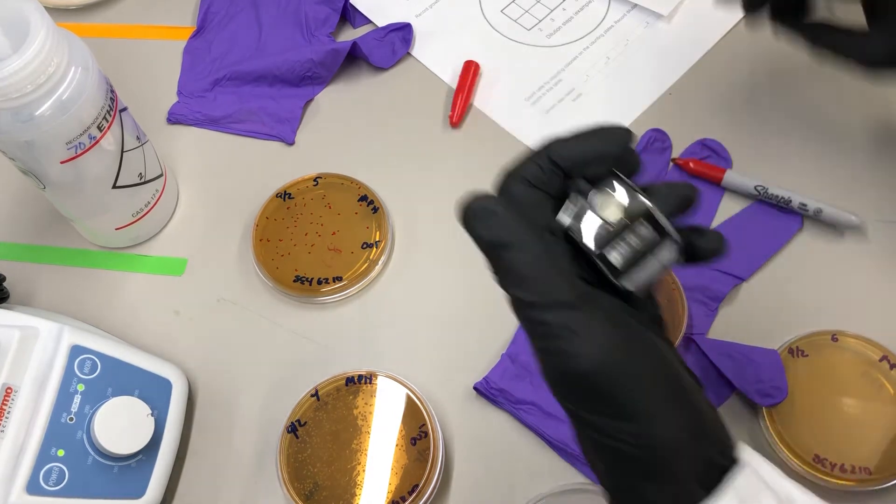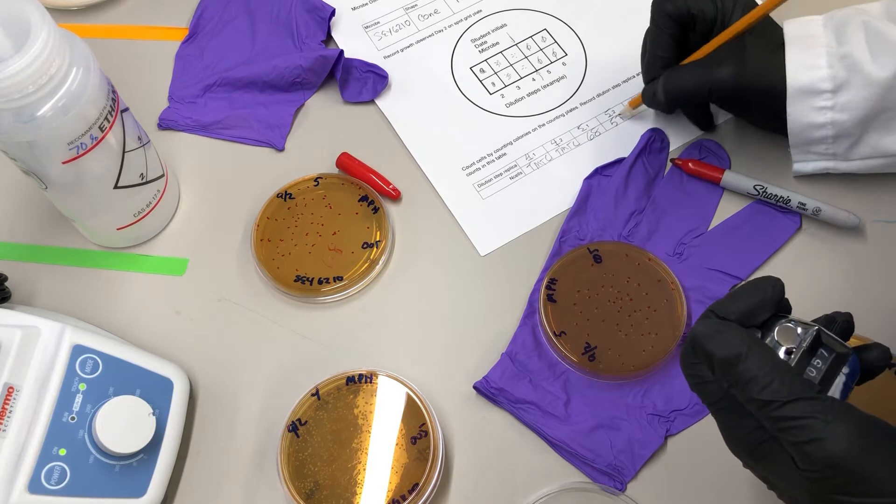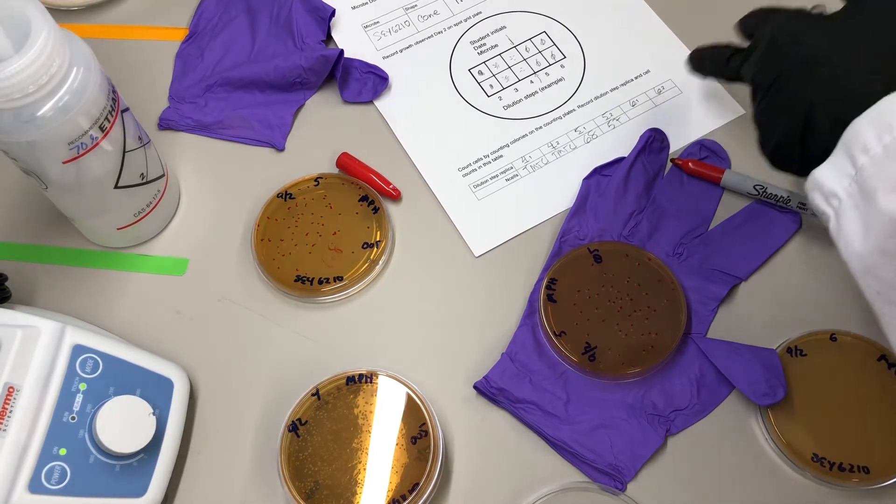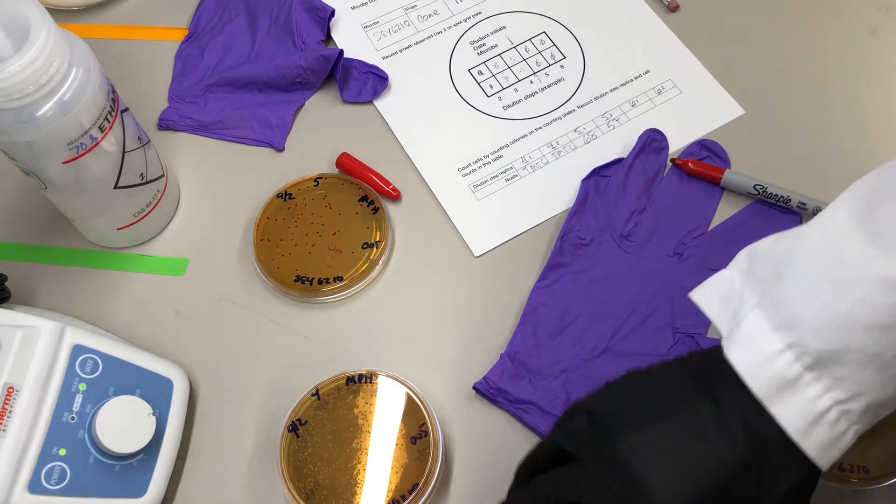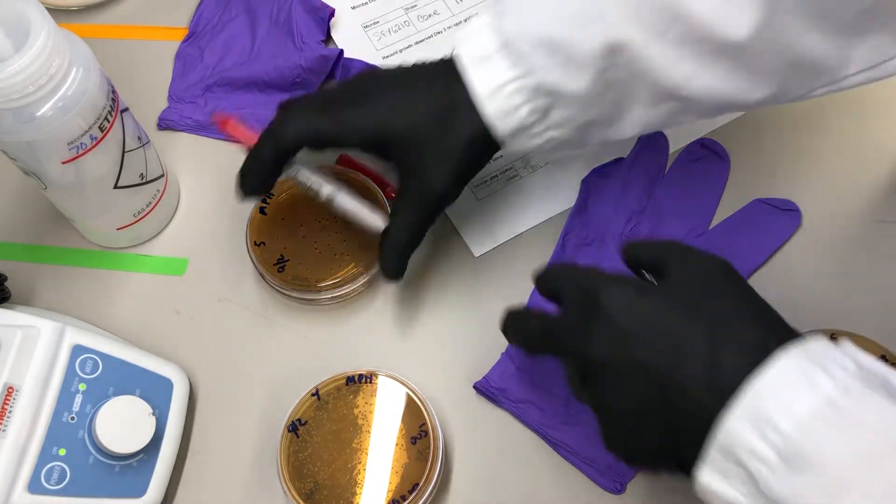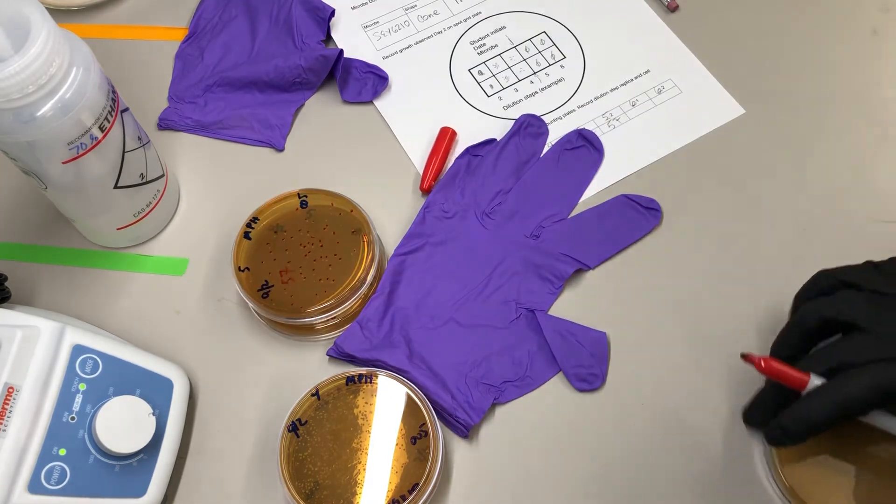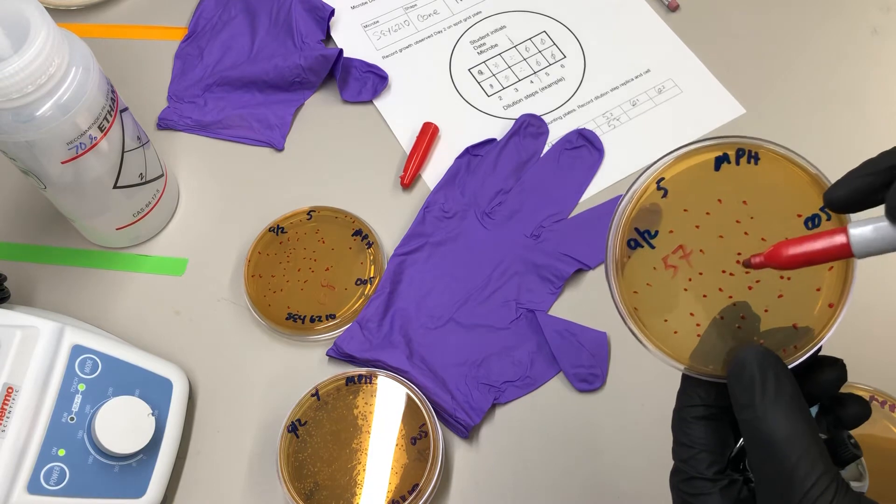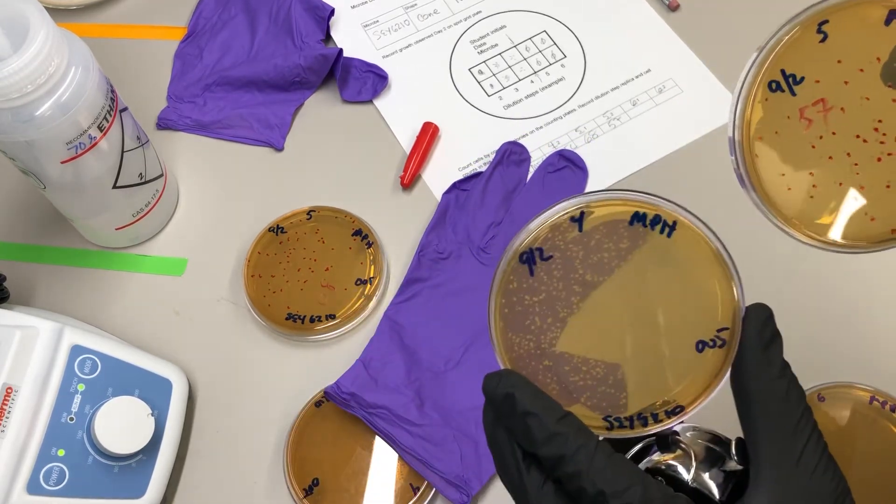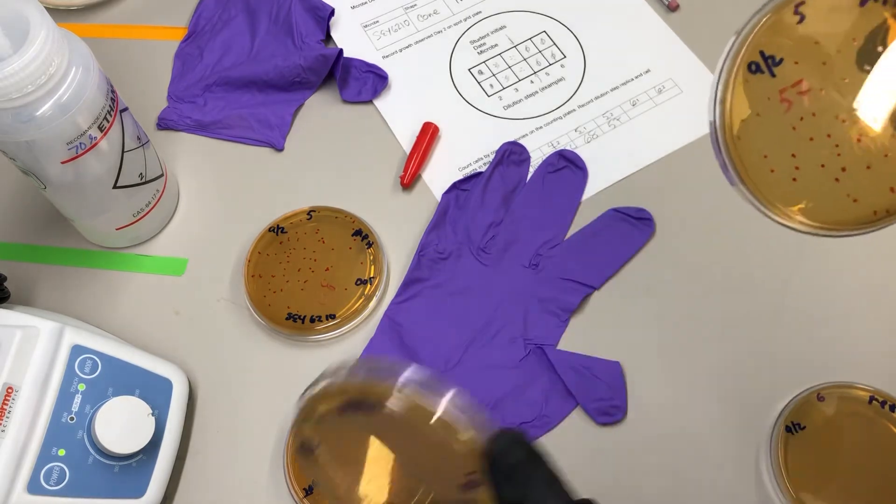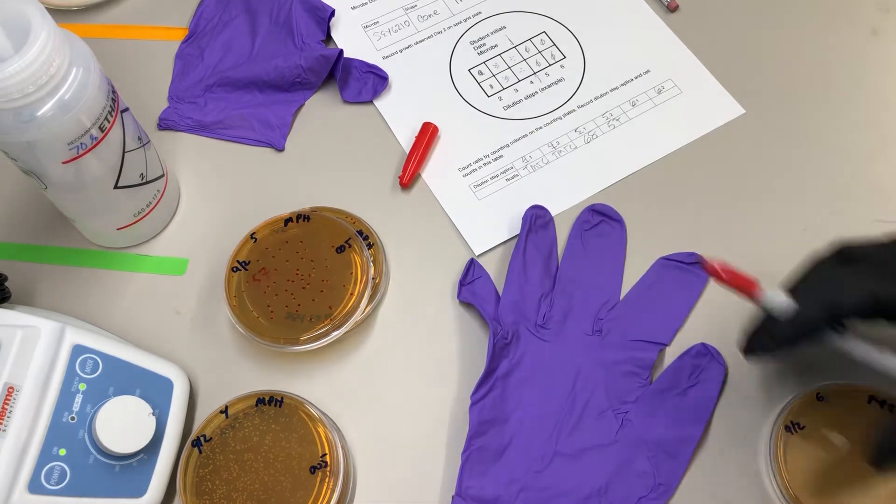Okay, that's 57, 57. And then, so if I have 57 here, I expect, you know, over 500 on this dilution step four, so that's reassuring that I'm well over the 300 colony limit. I definitely am not going to try to count those.